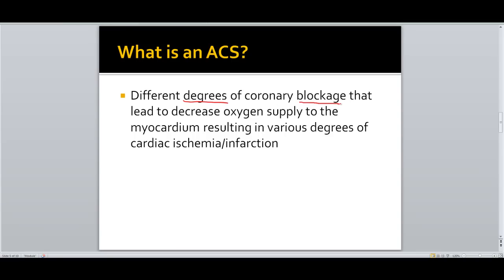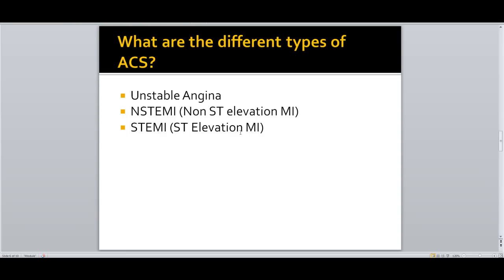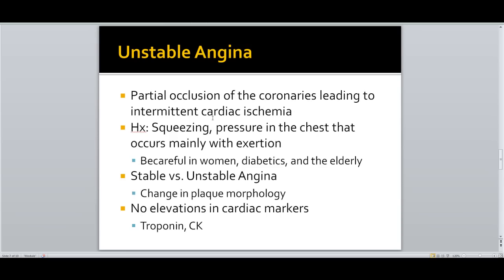An acute coronary syndrome represents different degrees of coronary blockage that lead to decreased oxygen supply to the myocardium, resulting in various degrees of cardiac ischemia and infarction. The different types are unstable angina, NSTEMI (non-ST elevation MI), and STEMI (ST elevation MI). It is vital to remember the differences between each type because this dictates how you treat and label the patient upon admission.